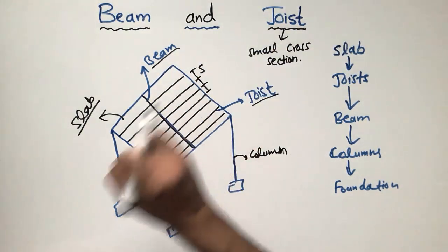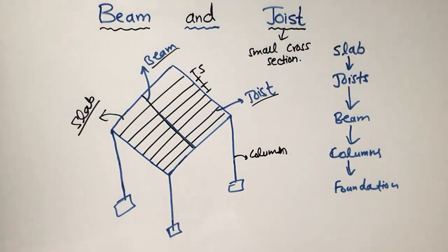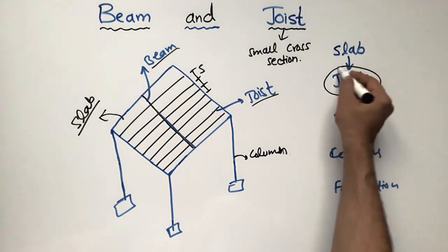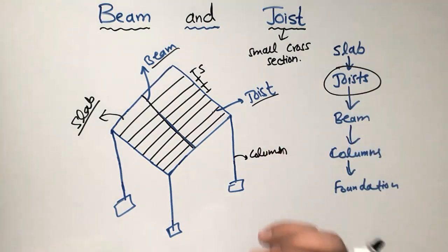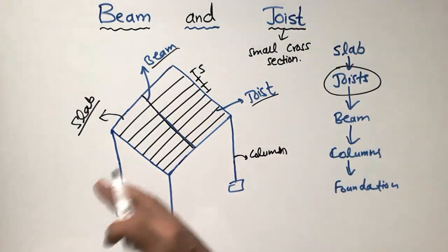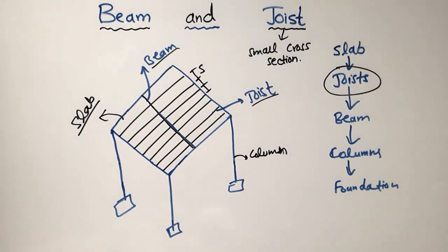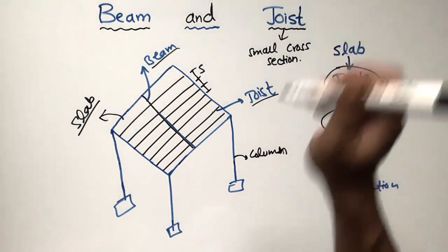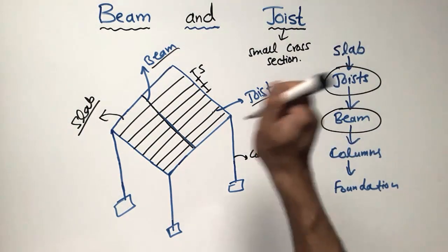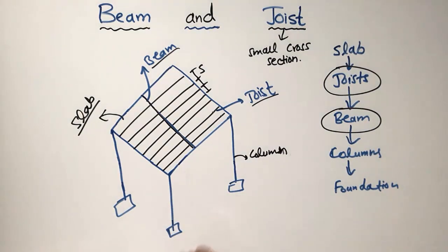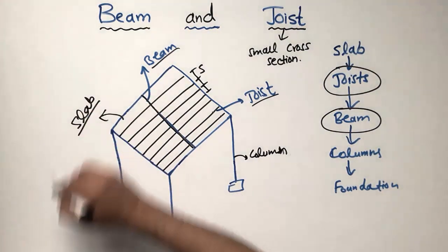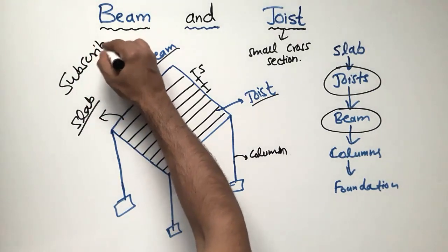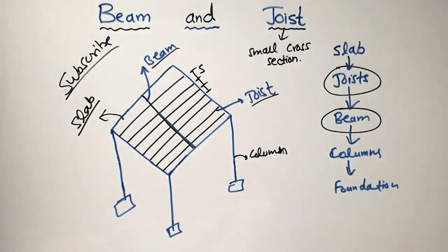The beam takes the load from the joists and transfers it to the column. To summarize: the joist is small in cross-section and provided in many numbers throughout the length of the slab, while the beam is big in cross-section and takes the load from the joists and transfers it to the column. That was all about the beam and joist — hope you guys understand. Don't forget to subscribe for more engineering videos. Thank you for watching.